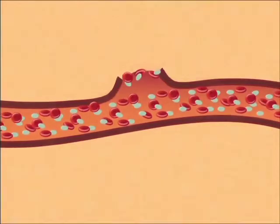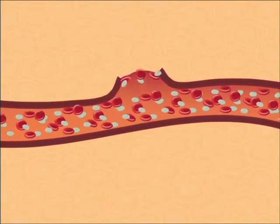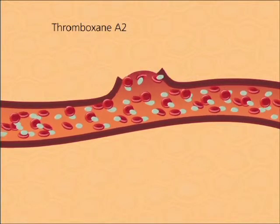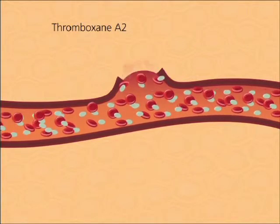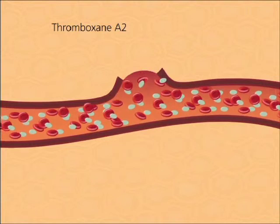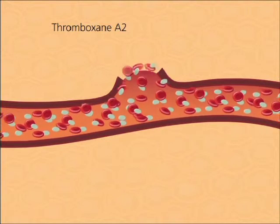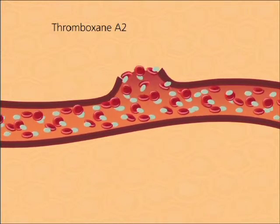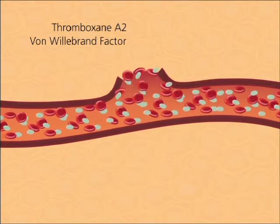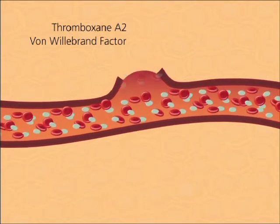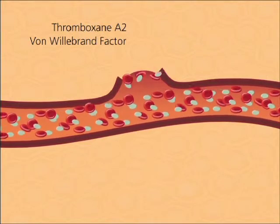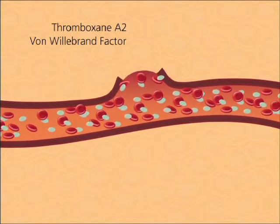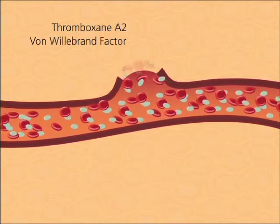Vast constriction in the region of injury results from the release of thromboxane A2, a major enzymatic product of platelet activation which causes vessel wall constriction. Von Willebrand factor is secreted by the endothelial cells and binds to exposed collagen fibers at the wound surface.